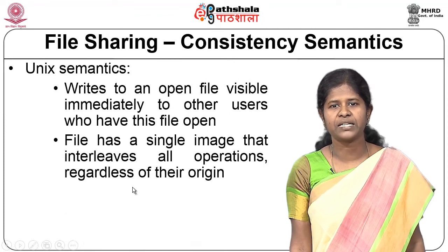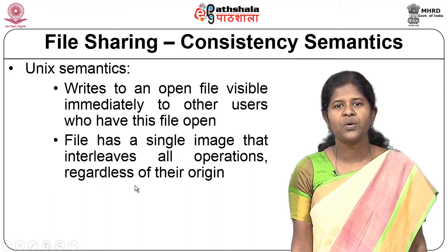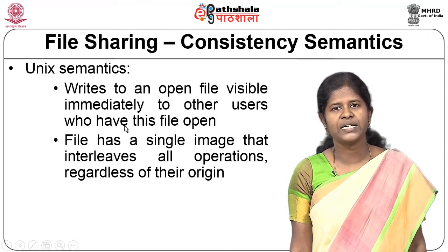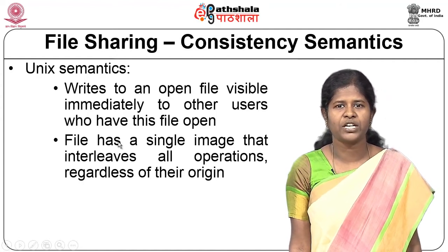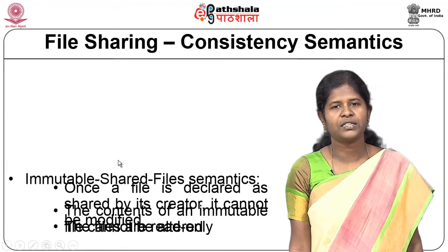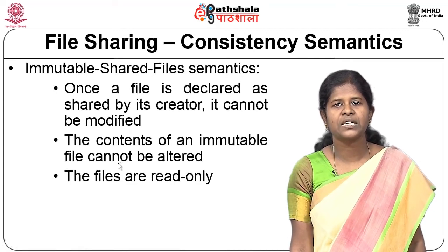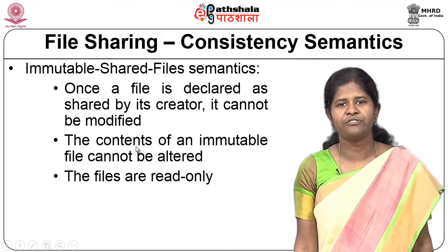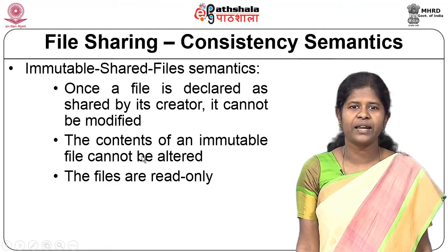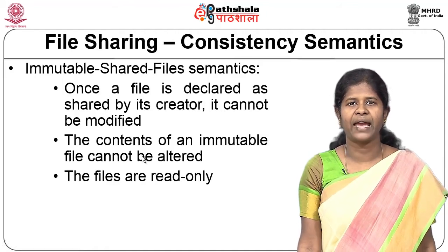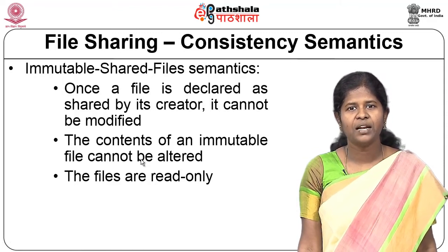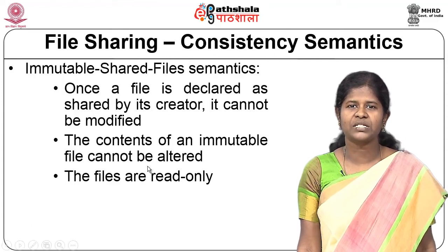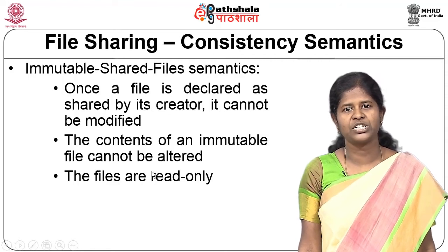Then you have a different kind of semantics used in Unix-flavored file systems, where a write to an open file is visible immediately to other users who have the file open. Here there is only a single image of the file being maintained, which interleaves all the operations regardless of their origin. The third category is immutable shared file semantics. From the word immutable, the contents of the file cannot be altered at all. Once a file is declared as shared by its creator, it cannot be modified. Shared files can only be read-only files; other users can only read from them, not write or modify. This is called immutable shared files semantics.